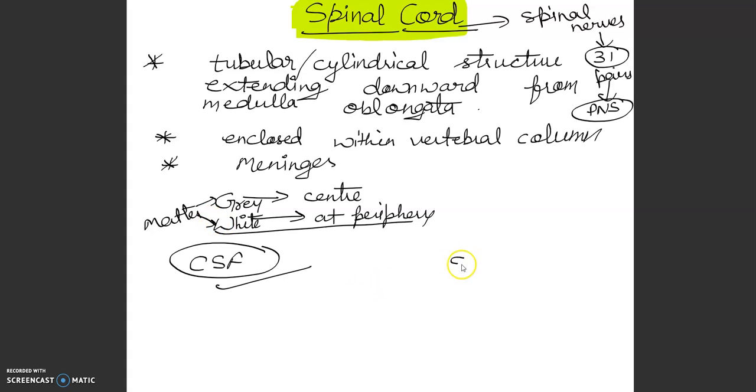Spinal nerves, this is the number of nerves I will tell you, that 31 pairs. These are emerging from the lateral side of the spinal cord, lateral side of the spinal cord.